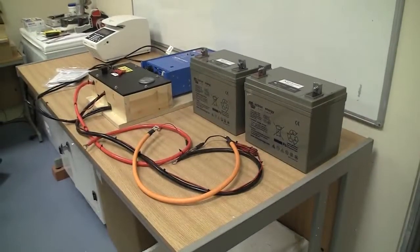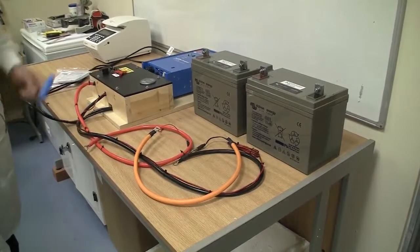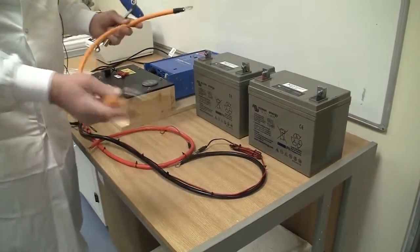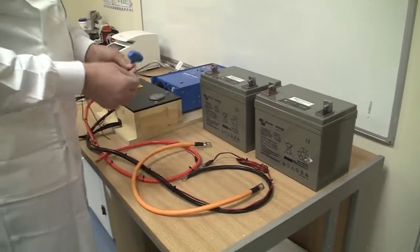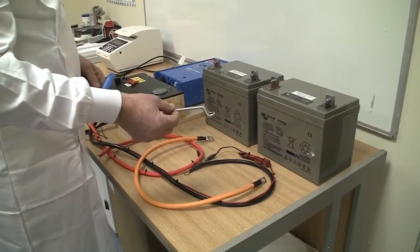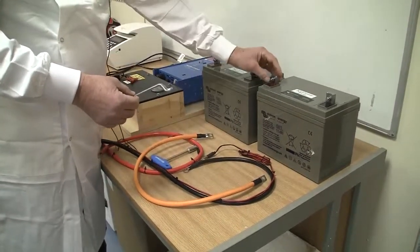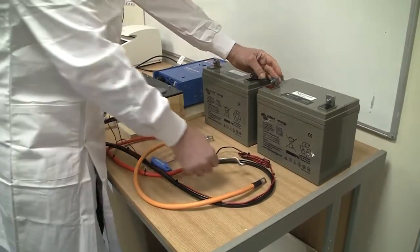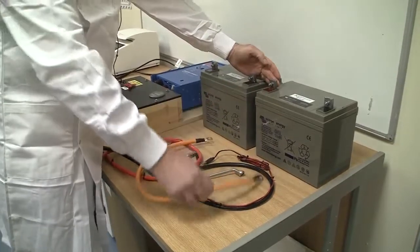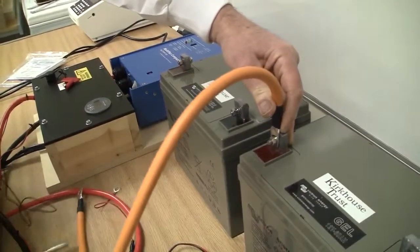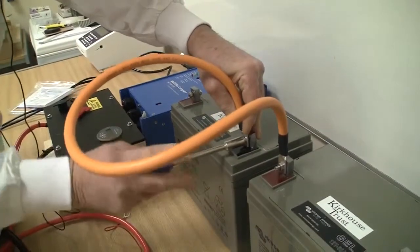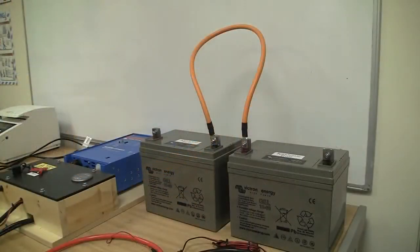In setting up the inverter battery backup the first stage is to connect the linking cable between the two batteries. This takes a 10mm spanner but it will vary sometimes depending on what your battery has as a connector. You connect the positive to the negative. There we have the two batteries connected together minus to plus, negative to positive.